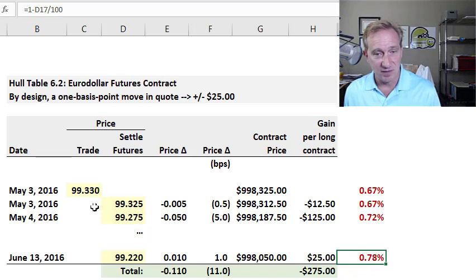You can see in terms of this trader—it doesn't say here, but this trader has entered a long position in this Eurodollar futures contract. The price has moved down because LIBOR has moved up.